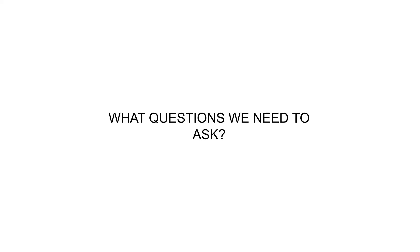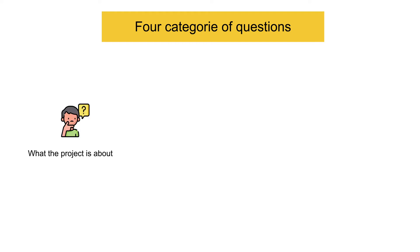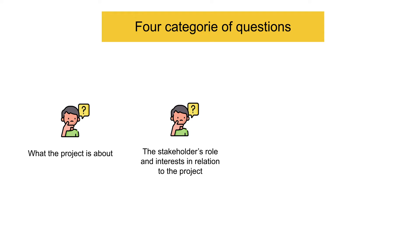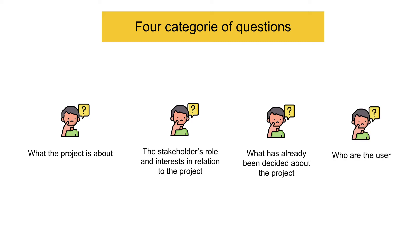What questions do we need to ask? We can categorize them into four types. The first one is what the project is about. The second one is the stakeholder's role and interest in relation to the project. The third one is what has already been decided about the project. And the fourth and final one is who are the users.